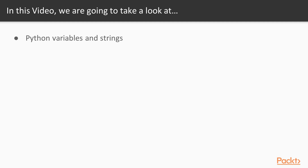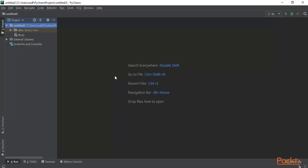In this video we are going to look at Python variables and strings, along with examples. You need to open PyCharm and inside that open a project. I am going to show you examples of variables and strings in Python. You can see here that I have started PyCharm inside my Windows 10 operating system, which we successfully installed in the previous section.